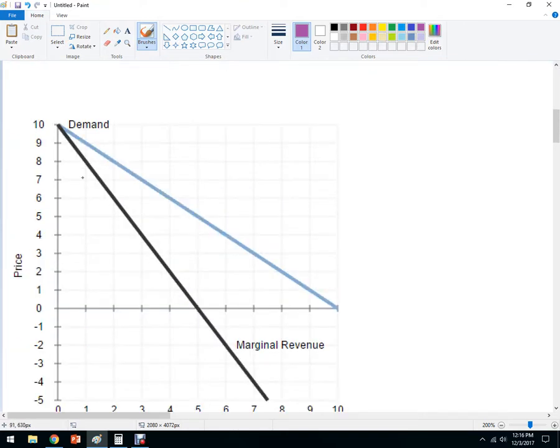Same demand curve, same marginal revenue curve. But in this case, let's assume that this is something like an album, like a song. And the average total cost is constant. It's the same cost to produce an additional unit. Once we've produced it once, we can digitally copy this thing over and over and over again. So that also turns into the marginal cost.